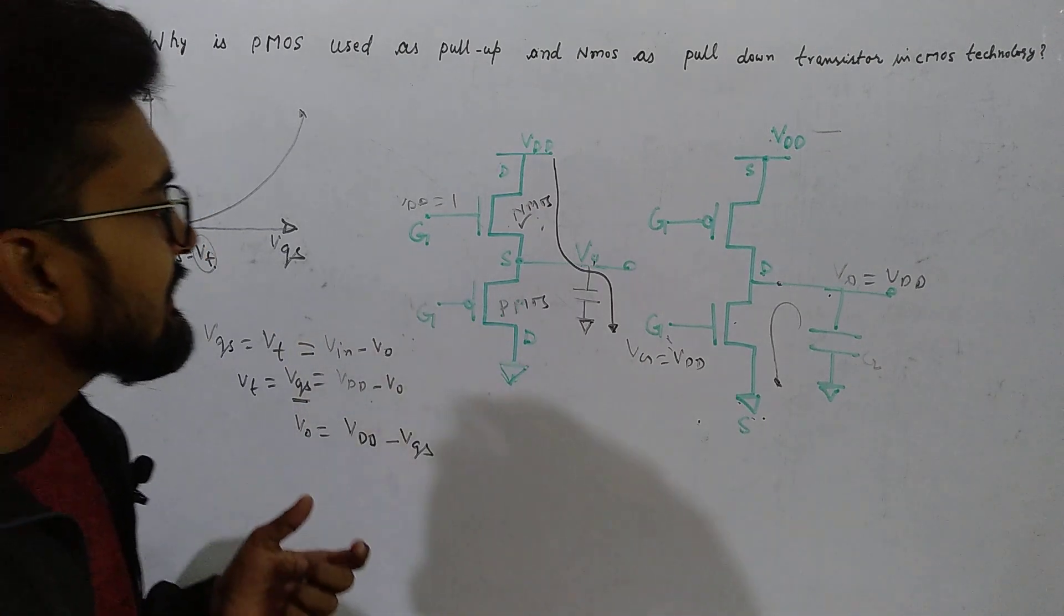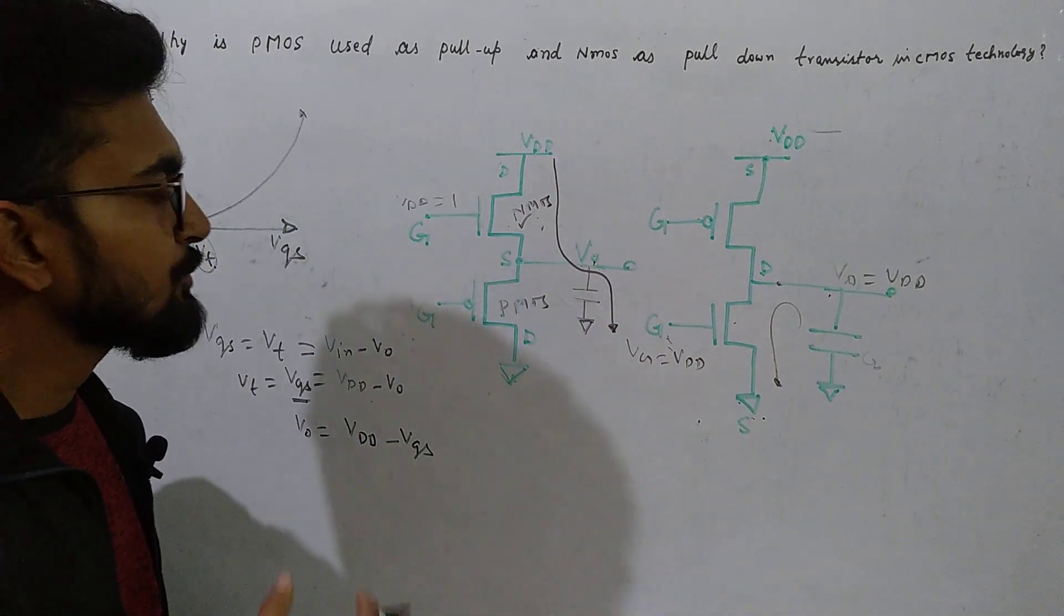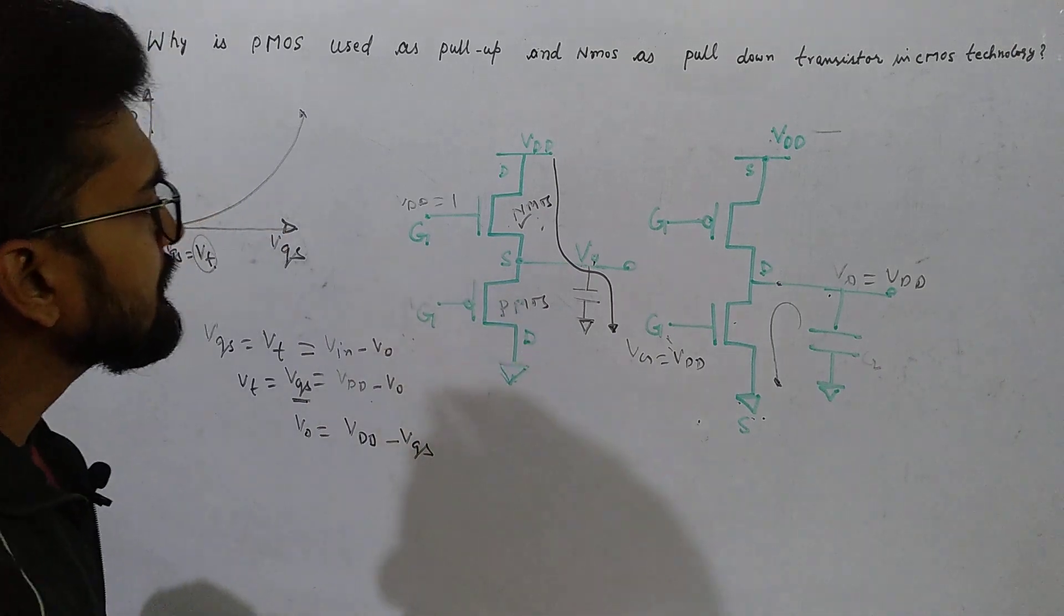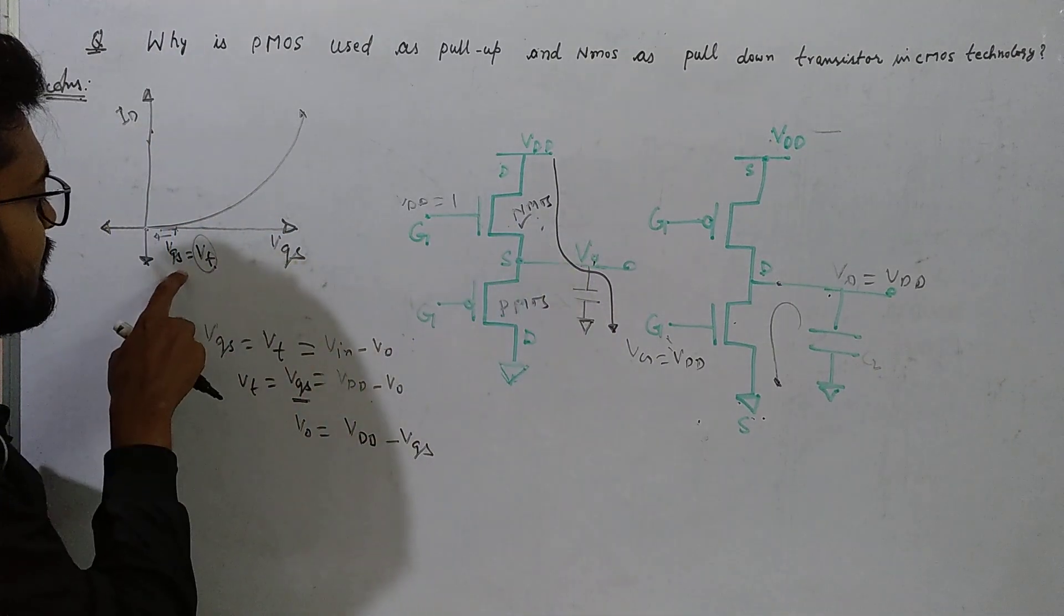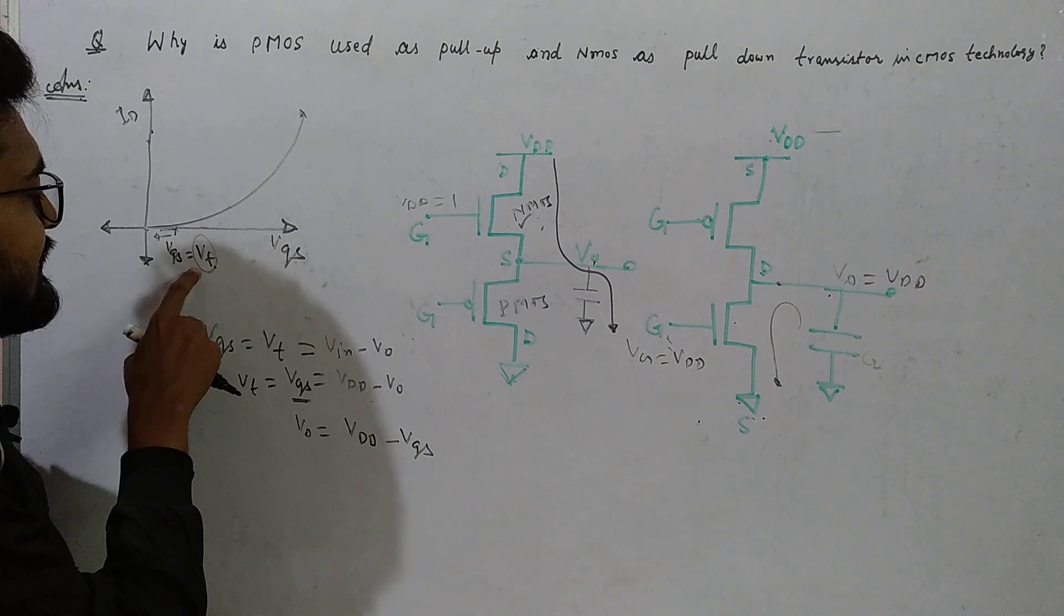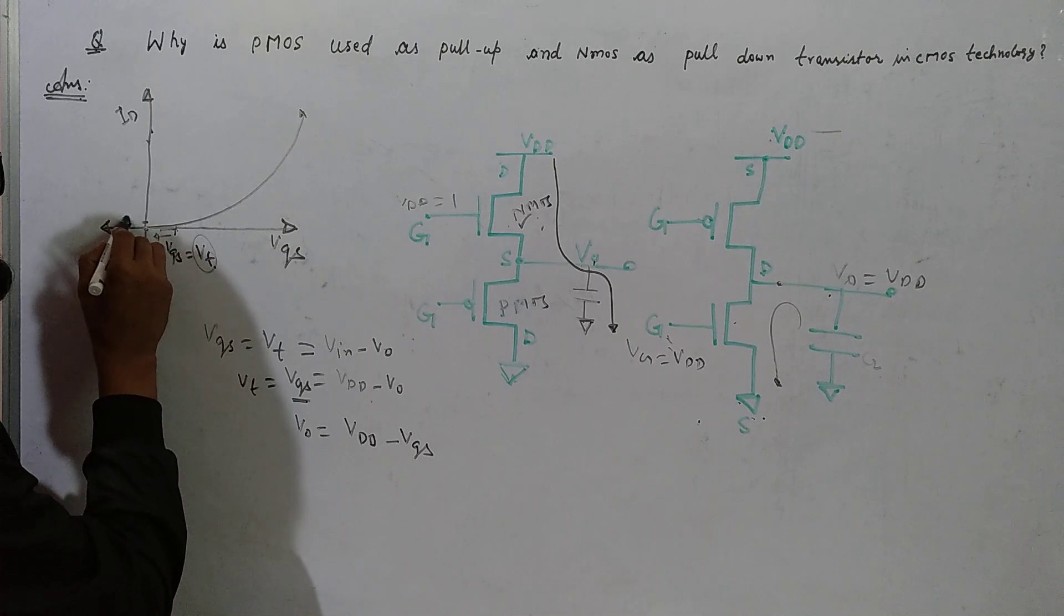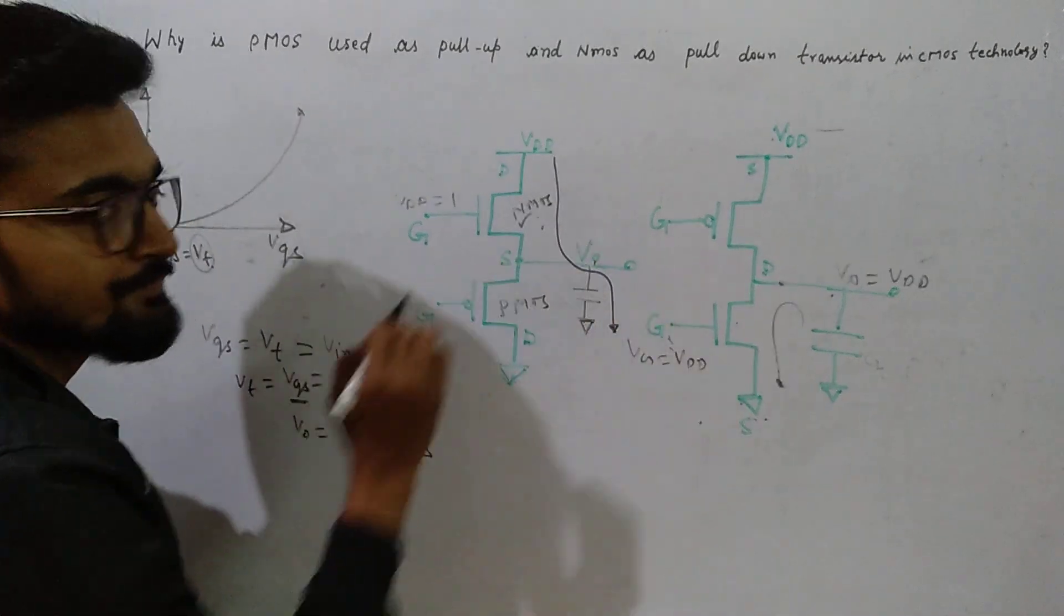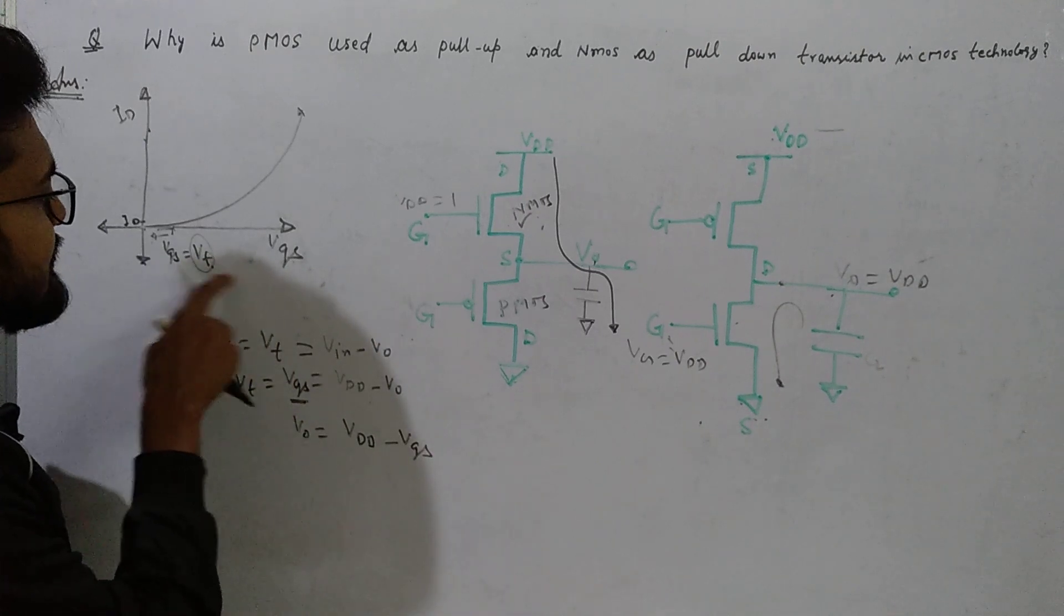Now the question is what is the maximum value to which the capacitor can be charged? That is the pull-up value. The NMOS transistor is on only for values where VGS is more than VT. When VGS equals VT, there is very small current that flows through this channel. To increase the current we need to have higher VGS.